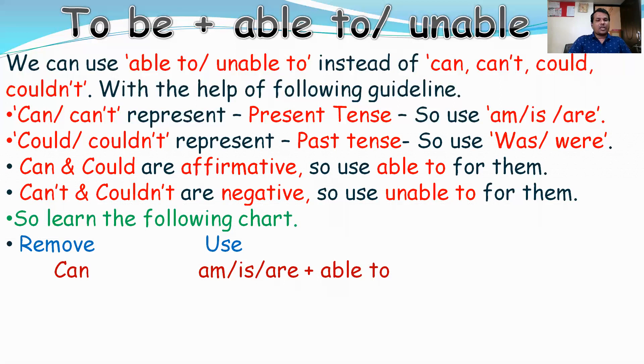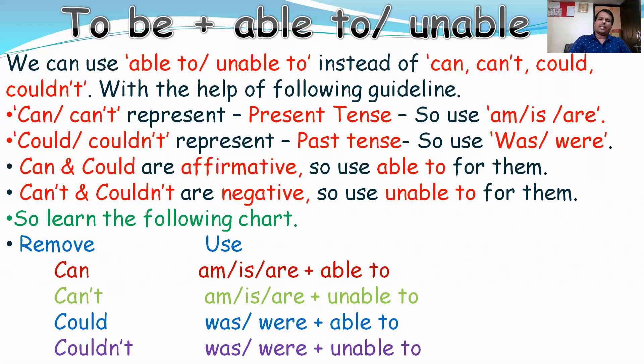Instead of can, you should use am/is/are plus able to. Can't: remove it and use am/is/are plus unable to because can't is negative. About could: could is affirmative and past tense, so use was/were plus able to. Couldn't is negative and past tense, so use was/were plus unable to.